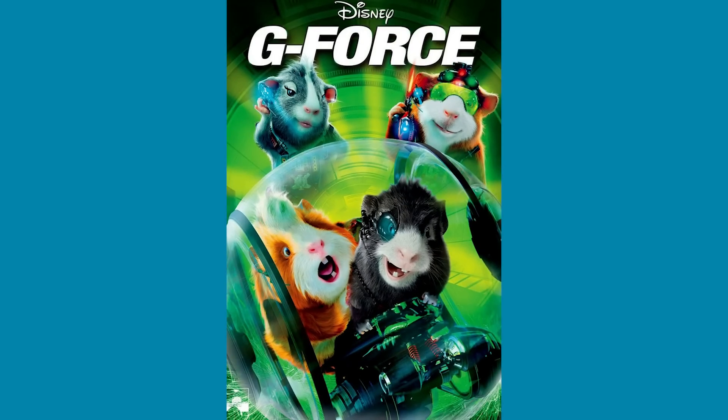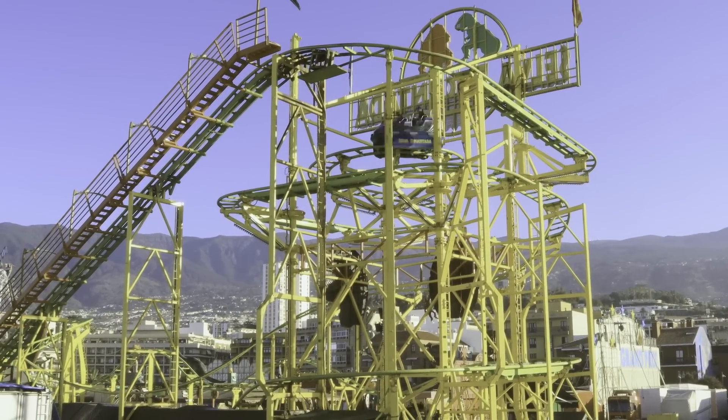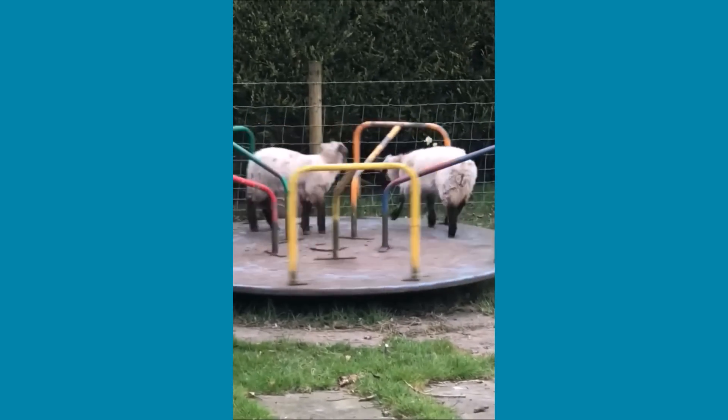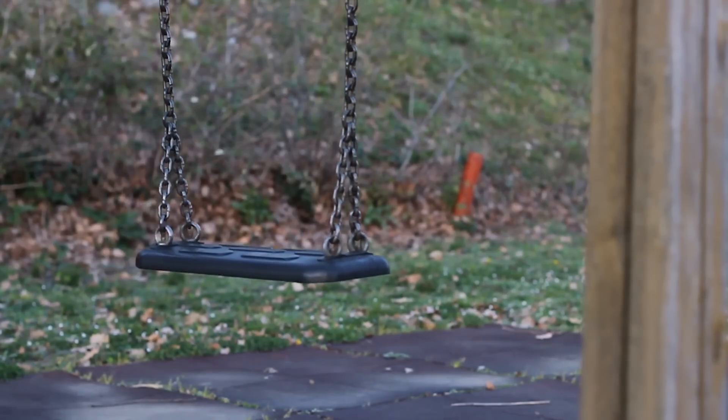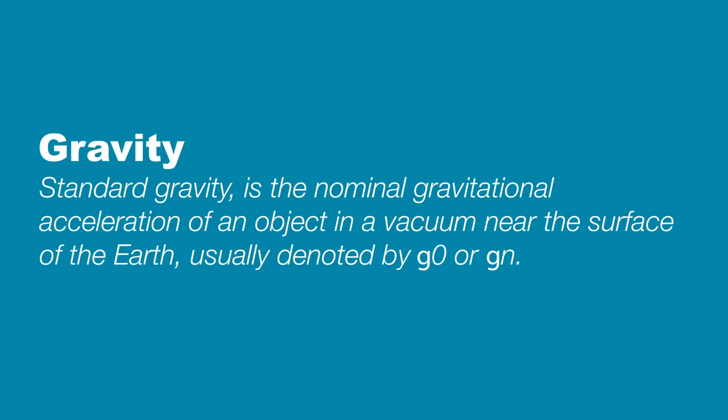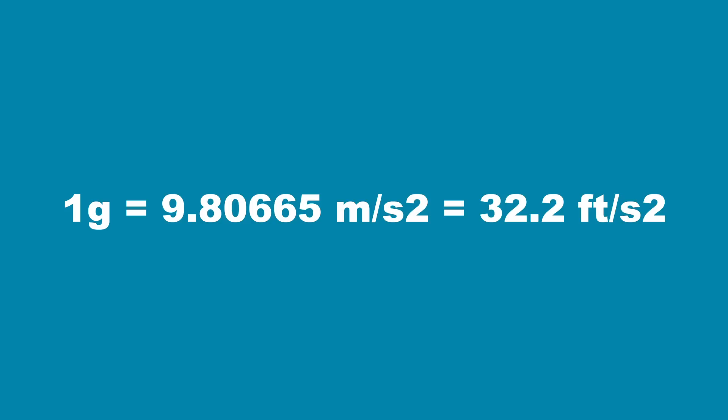Not that guinea pig movie. And if you've been on a roller coaster, carnival ride, one of those old school playground merry-go-rounds, or even just a swing set, you've definitely felt it. Standard gravity is the nominal gravitational acceleration of an object in a vacuum near the surface of the Earth, usually denoted by G0 or Gn. If all other forces are removed — such as air, which provides wind resistance — standard gravity is the rate of acceleration at which an object would fall to Earth. One G is equal to 9.80665 meters, or 32.2 feet per second squared.